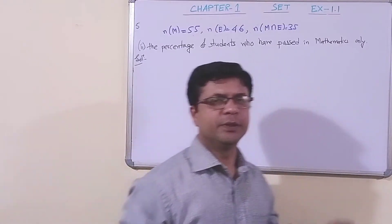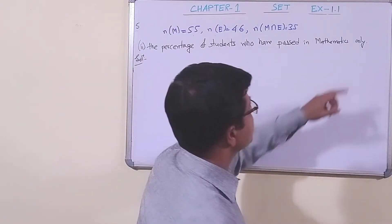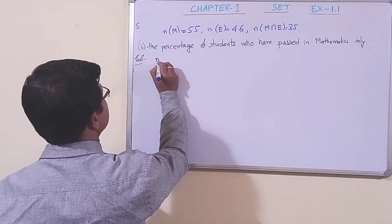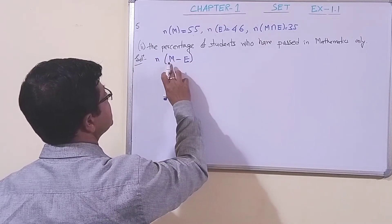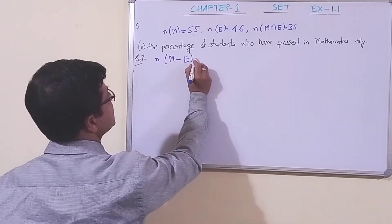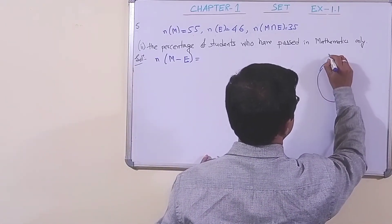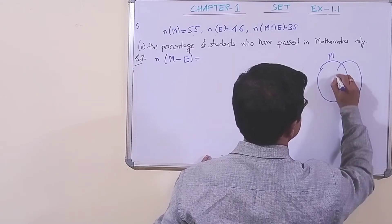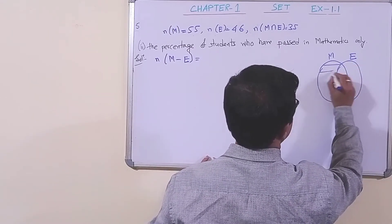Now, we have to find the percentage of students who have passed in mathematics only. That means n(M-E). That is, they have passed only in mathematics, not in English. Let us represent this in a Venn diagram. This is set M, this is set E. We have to find M-E, this part.